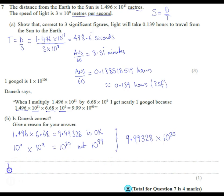So the problem is Danesh is wrong because he multiplied the powers instead of adding them. So he was kind of close with the number bit, but the power bit, the times 10 part, he wasn't very close with. He made a mistake with his indices rule.